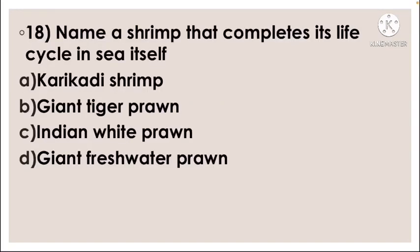Next question: Name a shrimp that completes its life cycle in the sea itself — option A Acetes shrimp, option B giant tiger prawn, option C Indian white prawn, option D giant freshwater prawn. The correct answer is option A, Acetes shrimp.